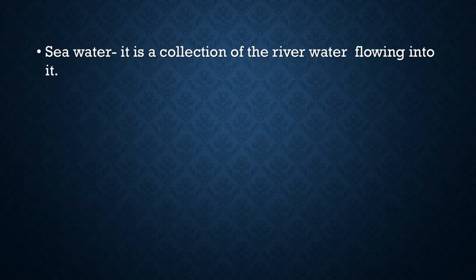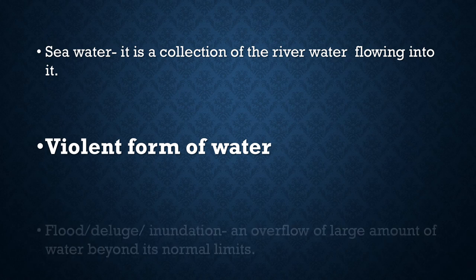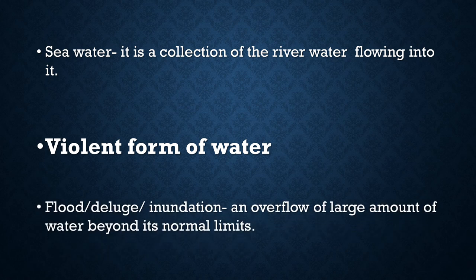Sea water — it is a collection of river water flowing into it. Nadiyon ka paani jahaan samundar mein jake milta hai, use sea water kehte hain. Violent form of water — paani ka ugra roop — ise hum alag-alag naam se jaante hain: flood, deluge, inundation — an overflow of large amount of water beyond its normal limit. Normal limit se jab paani upar chadh jaata hai, to use hum flood, deluge, inundation kehte hain.